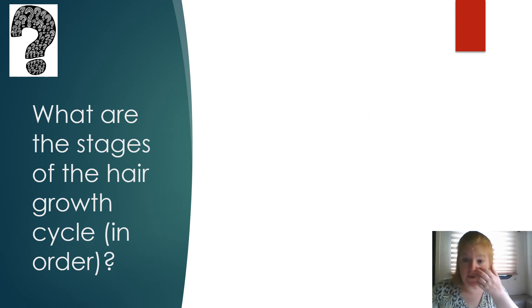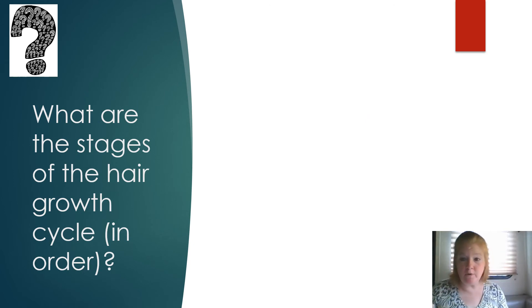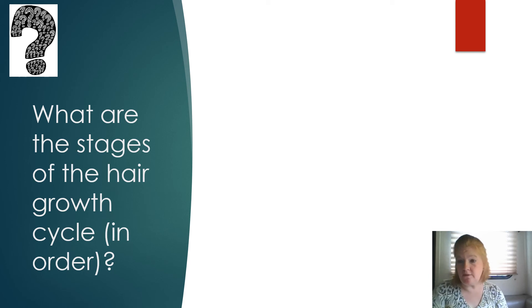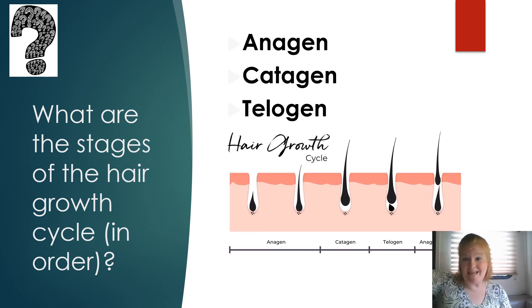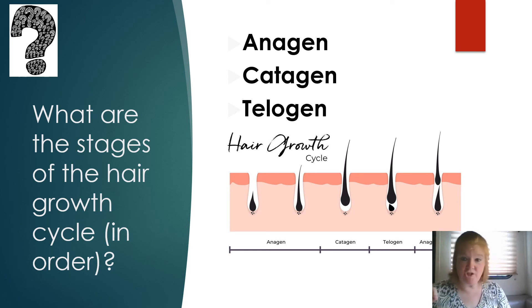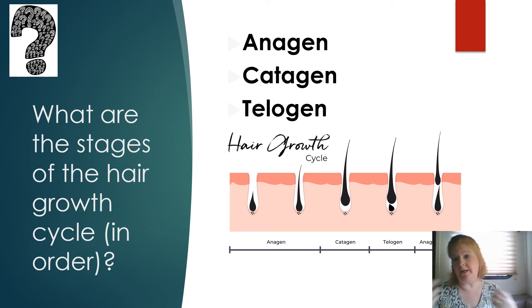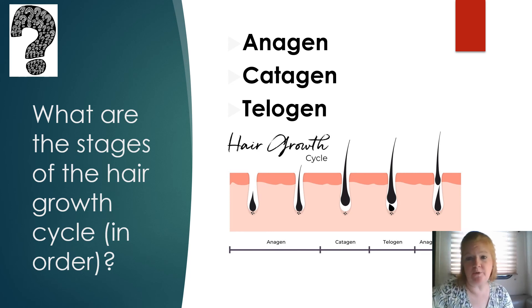The stages of the hair growth cycle in order are anagen, catagen, telogen — ACT. Telogen is resting, and when the hair restarts growth in anagen, it pushes out the old hair.